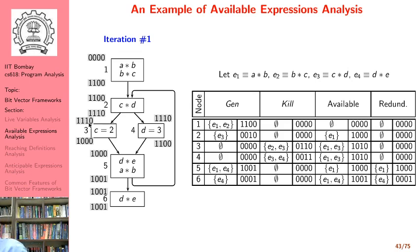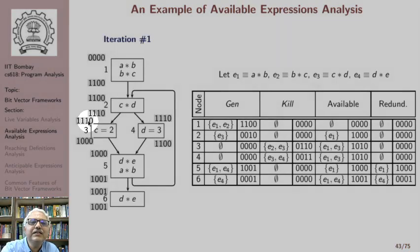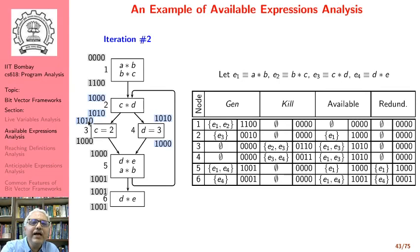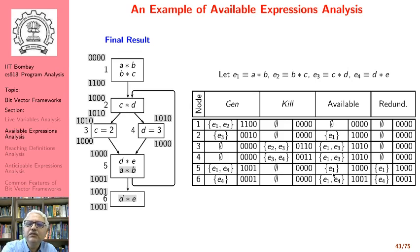Now we perform the second iteration. In the second iteration we take an intersection of 1 1 0 0 and 1 0 0 1, giving 1 0 0 0, and adding the third expression being made available we get the bit vector 1 0 1 0. When we perform the next iteration we find that the values do not change, and this is our final result, which matches the expected computation.